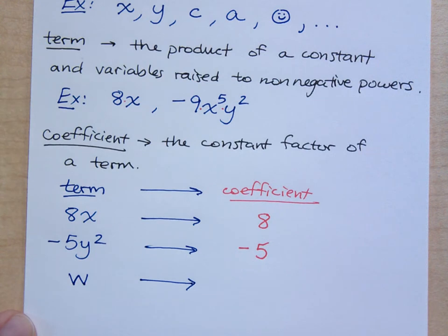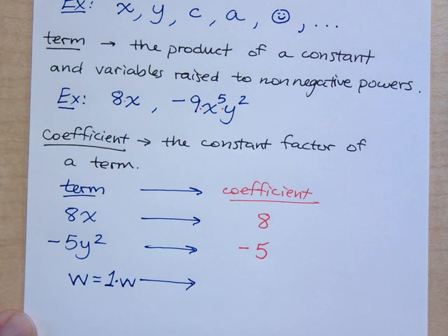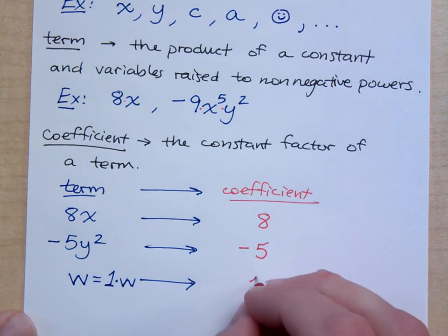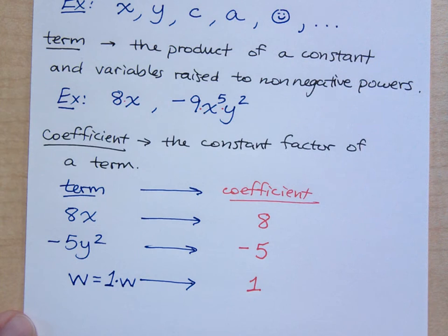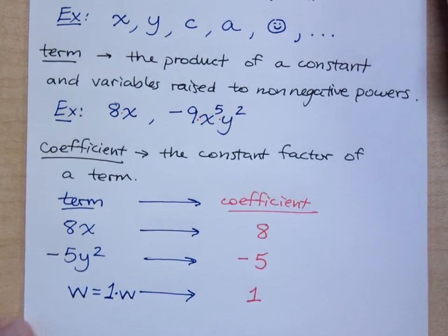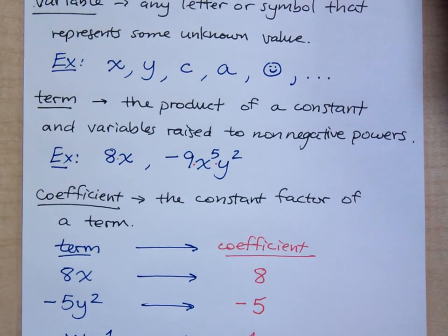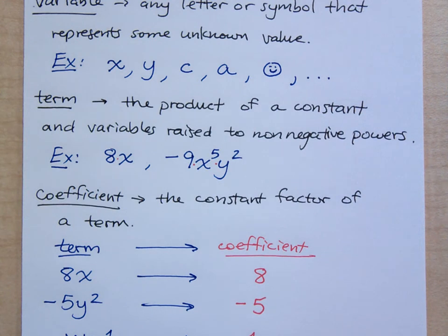If I were to say w, the coefficient is 1. Even though it's not written, this is the same as saying 1 times w. We've seen this before because 1 is the multiplicative identity — you can multiply anything times 1 and it won't change the answer. So the coefficient is 1. Sometimes we can have weird symbols for the variable, like a smiley face — and why is there not a nose? Maybe it's from a Twilight Zone episode. Sometimes things get freaky.